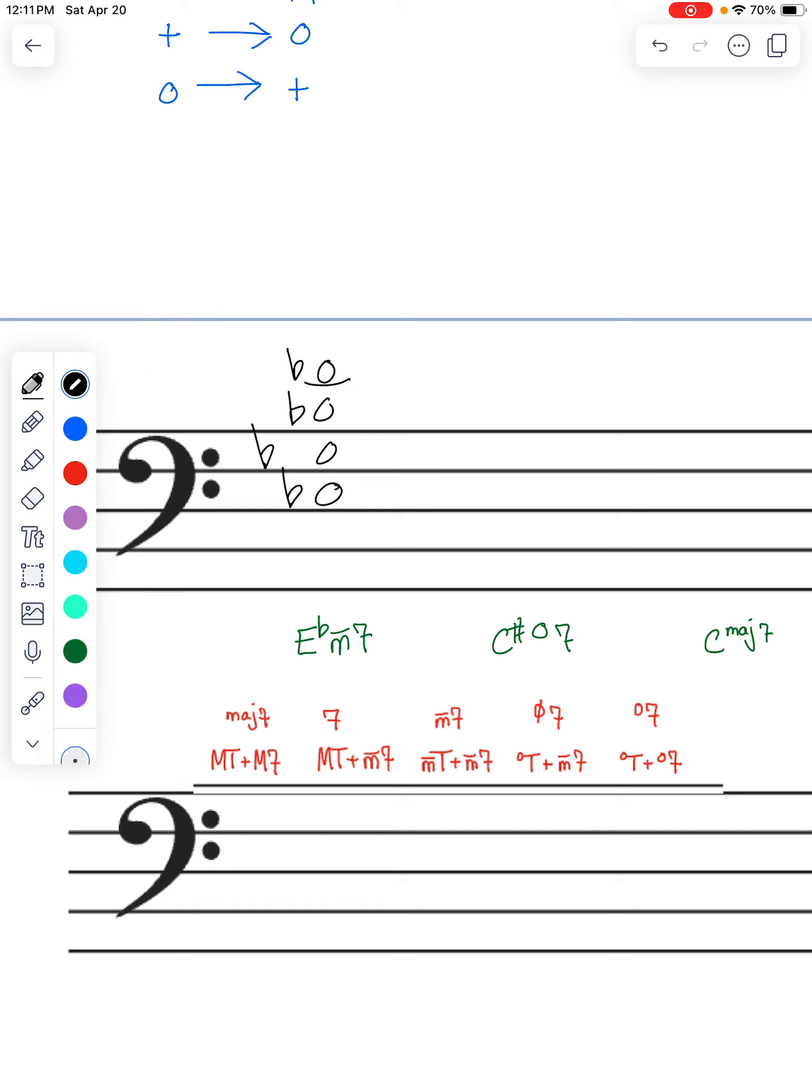All right, our next one is a C-sharp fully diminished 7. So we need a diminished triad and a diminished 7. C-sharp major, we know everything is sharp in C-sharp major. So let's do C-sharp. C-sharp is going to stay our root, and then normally we would have E-sharp and G-sharp and B-sharp if we had it all major. But we need a minor 3rd and a diminished 5th, and we need a diminished 7.